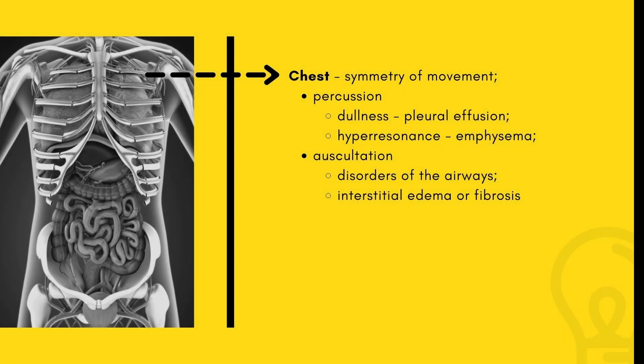Examination of the chest should focus on symmetry of movement. Percussion, wherein dullness is indicative of pleural effusion and hyperresonance is a sign of emphysema, and auscultation where wheezes and rhonchi, prolonged expiratory phase, and diminished breath sounds are all clues to disorders of the airways. Rales suggest interstitial edema or fibrosis.